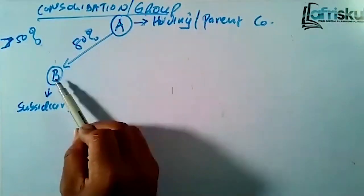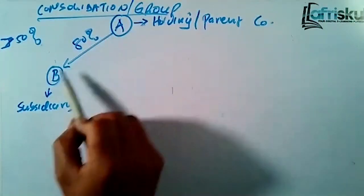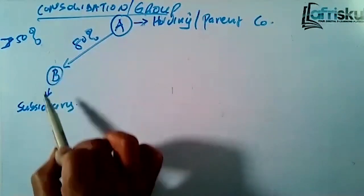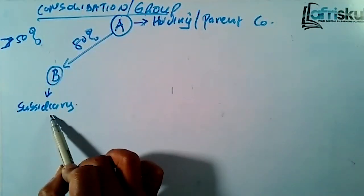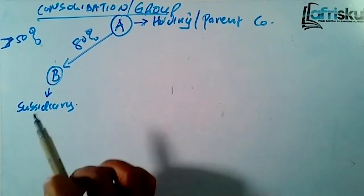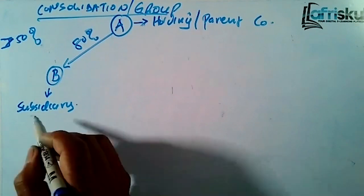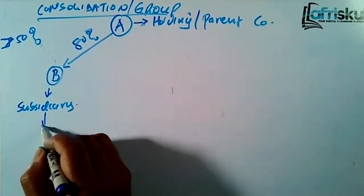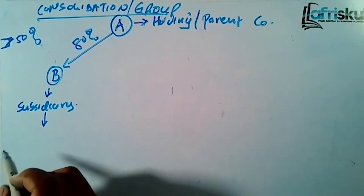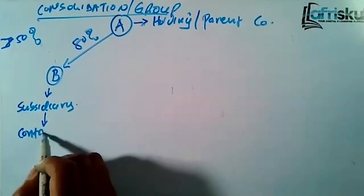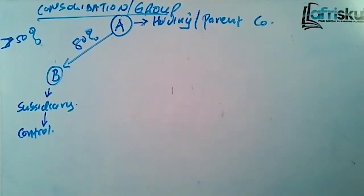Company A has acquired Company B at 80 percent, so B becomes a subsidiary. Since we have more than half of the shares in the subsidiary, that means we can have what we call control — we can control them.